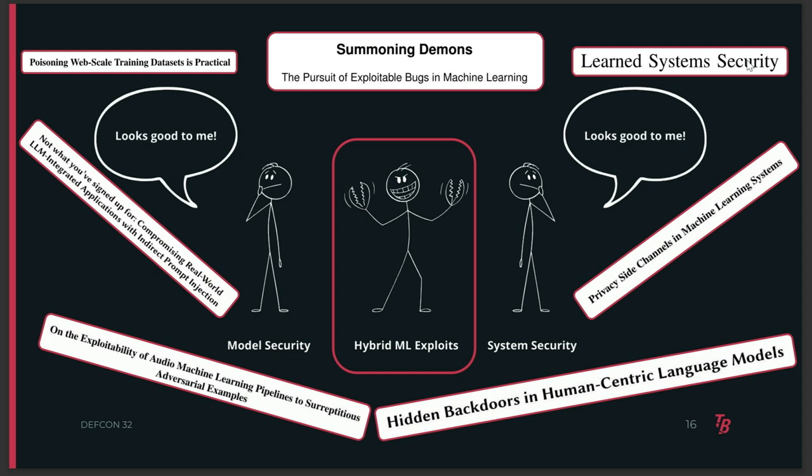Exploitable software gadgets have been used for backdoors. The Summoning Demons paper chained model evasion and memory corruption. And the Learned System Security paper has an example of a poisoning attack that caused an exponential memory blowup in an index structure. But the ML security literature, frameworks, and tools are largely limited to specific instances or implications. What I'm trying to do here is treat this interaction explicitly and systematically — and that's why I made this framework.